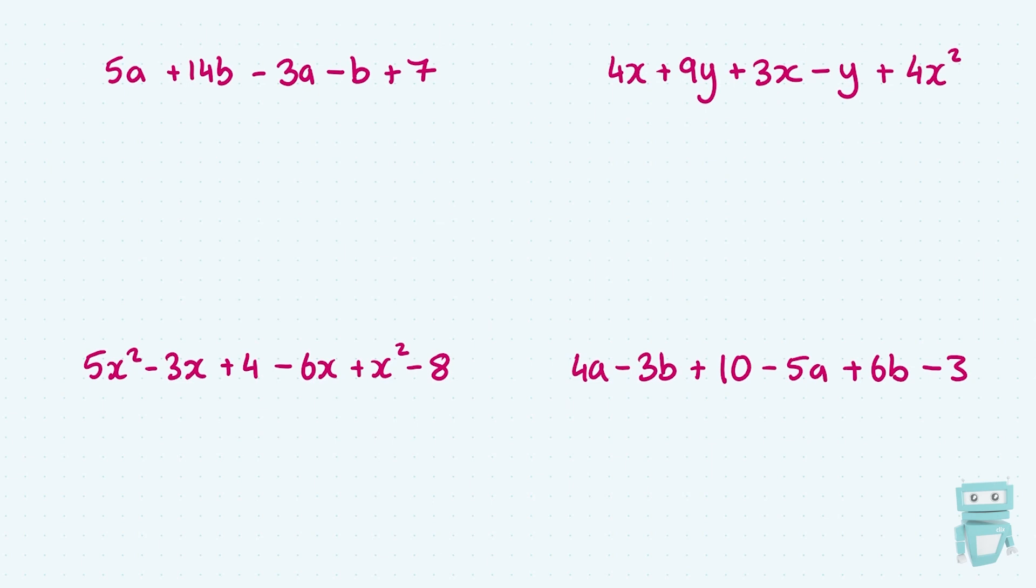Say I asked you to simplify the first question here, 5a plus 14b minus 3a minus b plus 7. Well, what you want to do here is add and subtract the like terms.